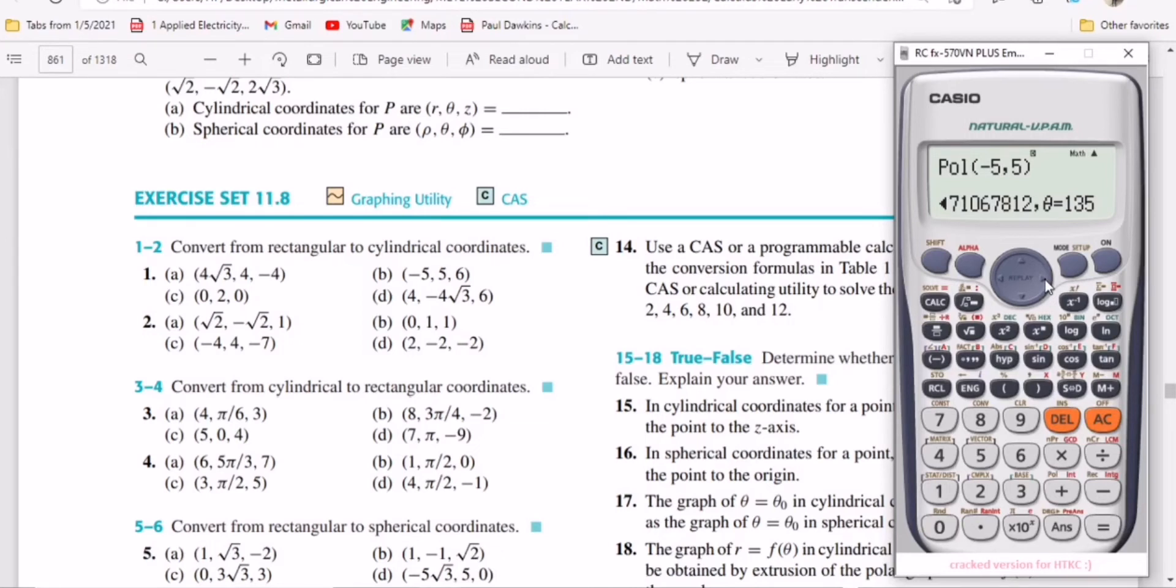That means r is approximately 7.1 and the theta value is 135°. But know that with the cylindrical coordinate, z is 6. So when you express this, you're going to express it as (7.1, 135°, 6).